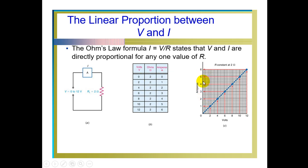When we draw the characteristics for resistance, we call them VI characteristics. We take current in Ampere on the y-axis and voltage in Volts on the x-axis. For 0 voltage there is no current. For 2 Volts applied there is 1 Ampere current. For 4 Volt applied, 4 by 2 gives 2 Ampere. For 6 Volt, 6 by 2 gives 3 Ampere. For 8 Volt, 8 by 2 gives 4 Ampere. Based on the equation I equal to V by R, we can calculate the points to draw the characteristics.